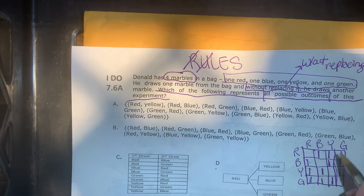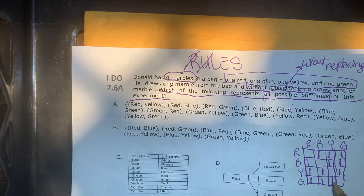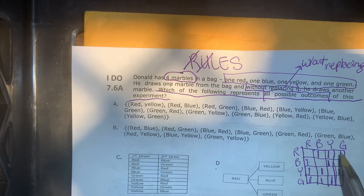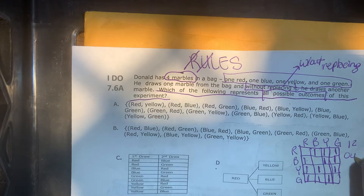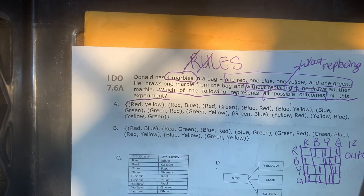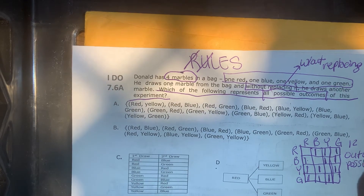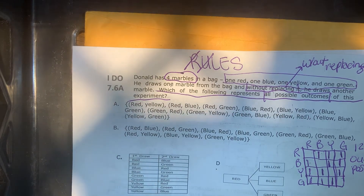So how many total outcomes are there? Counting all combinations: 1, 2, 3, 4, 5, 6, 7, 8, 9, 10, 11, 12. There are 12 possible outcomes in total.